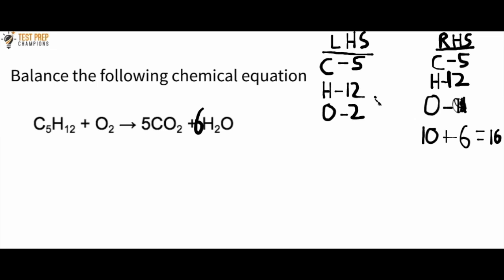To fix this, I'm going to put an eight in front of O2 on the left-hand side. Eight times two is 16, so now we have 16 oxygens on each side. Everything checks out: carbons are both five, hydrogens are both twelve, oxygens are both sixteen — this is a perfectly balanced chemical equation.